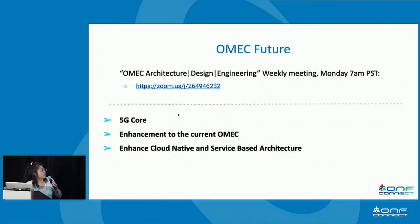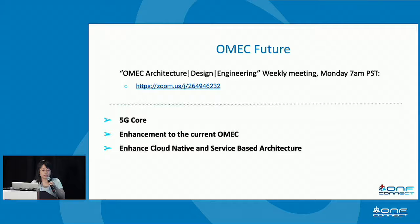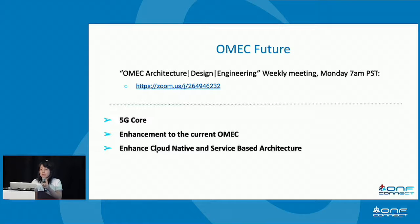For the future, we will focus on three areas. The first is the 5G call. We will continue to enhance the current OMAC. And as noted this morning, using Kubernetes and containers is very cloud native and easy to deploy, so we will continue to enhance the cloud native and service-based architecture. These are the three main directions for the future.